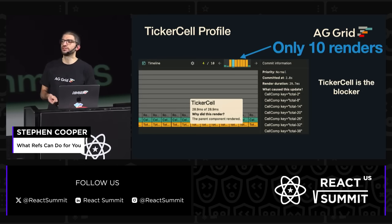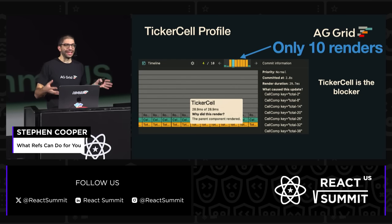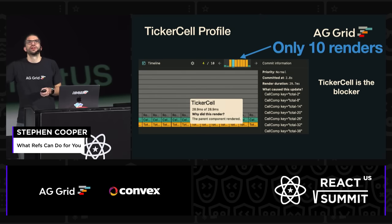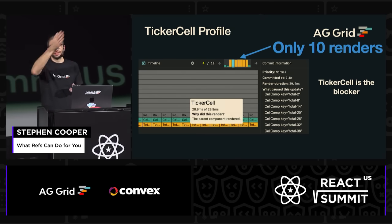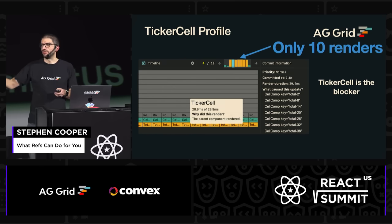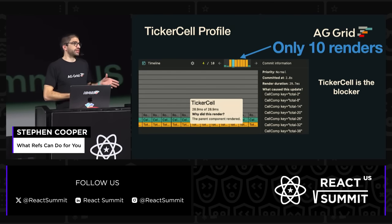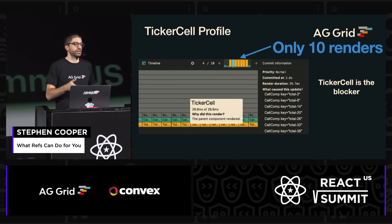This time, in the profile, it looks quite different. We've only actually managed to render it 10 times. This is why, instead of having lots and lots of different renders where you get that smooth resizing, we've instead got the browser getting stuck, it re-renders, the browser gets stuck, it re-renders. You can see this with the much taller bars and the time that they were taking. And we can quite clearly see that it's this ticker cell that we've provided which is the bottleneck and which is blocking the browser.